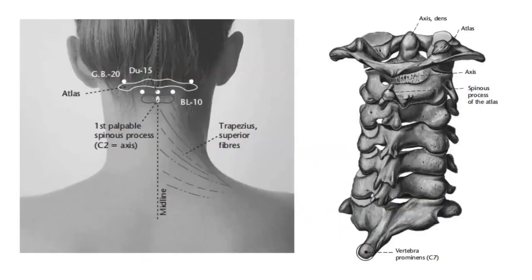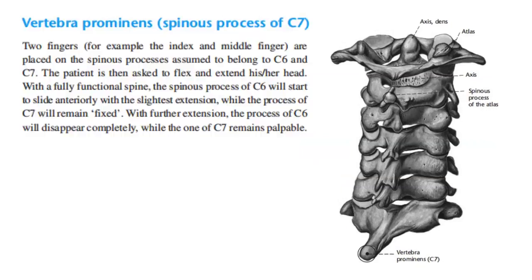Here we can see the location of C6, and how we would be able to palpate the first spinous process, which is the axis or second cervical vertebra — the first palpable spinous process.